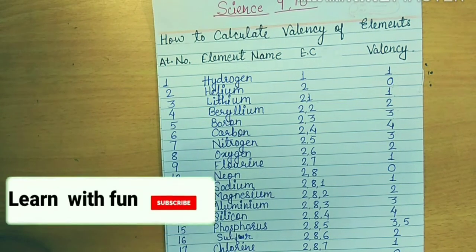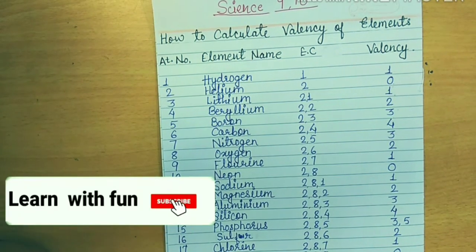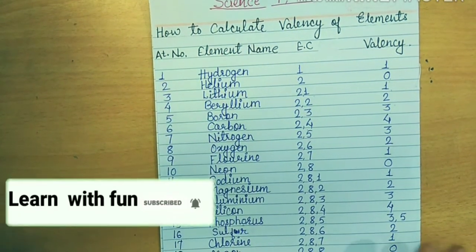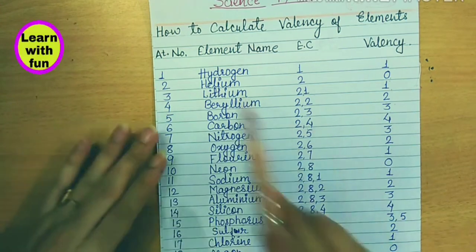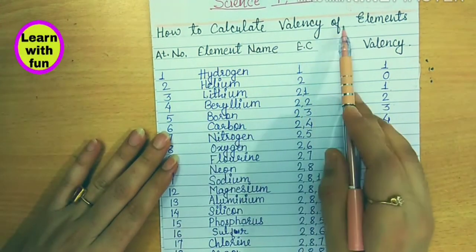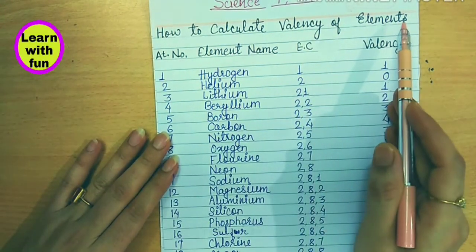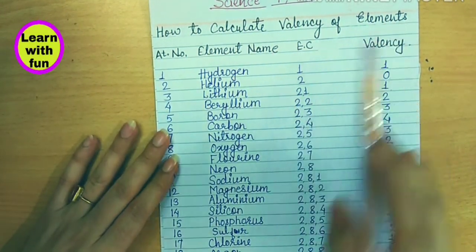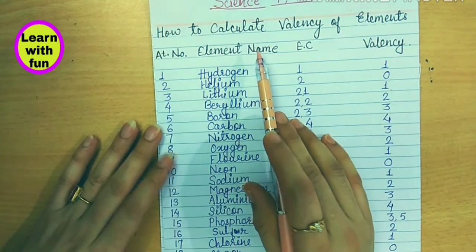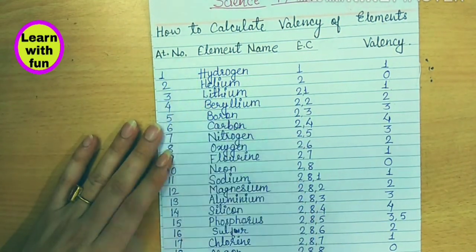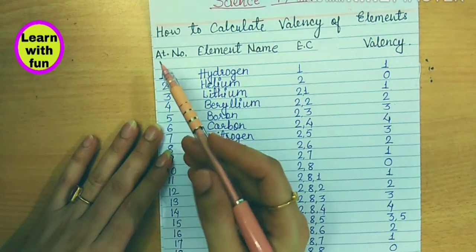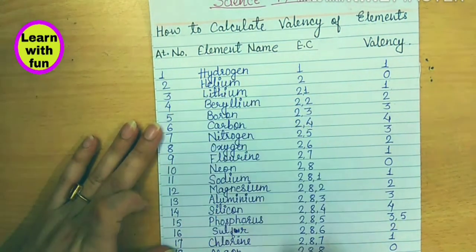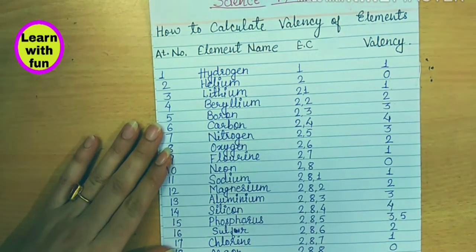Welcome back to my channel Learn with Fun with Nisha. Today in this video we are going to learn about how to calculate the valency of an element. To find out the valency of any element, you should know the atomic number. That's why I have written here atomic numbers 1 to 20, element names, electronic configuration, and the valency.